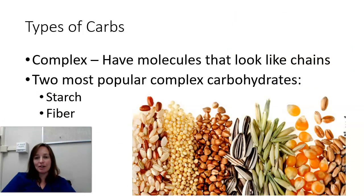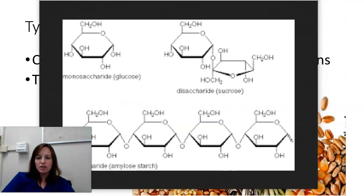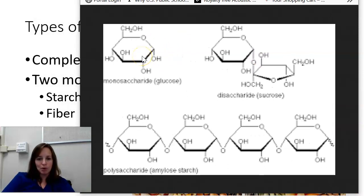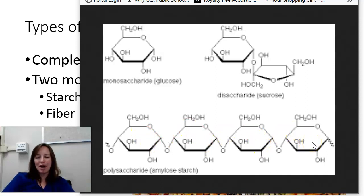Complex carbs have molecules that look like chains. I have a picture loaded up here for you to see. The two types of sugars at the top of this screen are simple carbs: monosaccharide and disaccharide. Mono meaning one ring of carbons, and di meaning two rings. Complex carbohydrates are called polysaccharides. They are a long chain, oftentimes very branched - that's why they're called complex. Their structure is very complex.